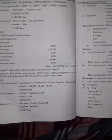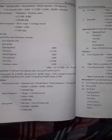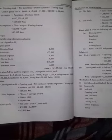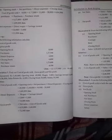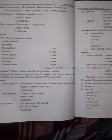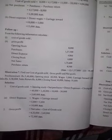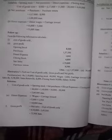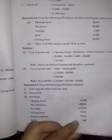Net sales minus COGS gives us the gross profit. Because COGS equals opening stock plus purchases minus closing stock. Gross profit is called net sales minus COGS.